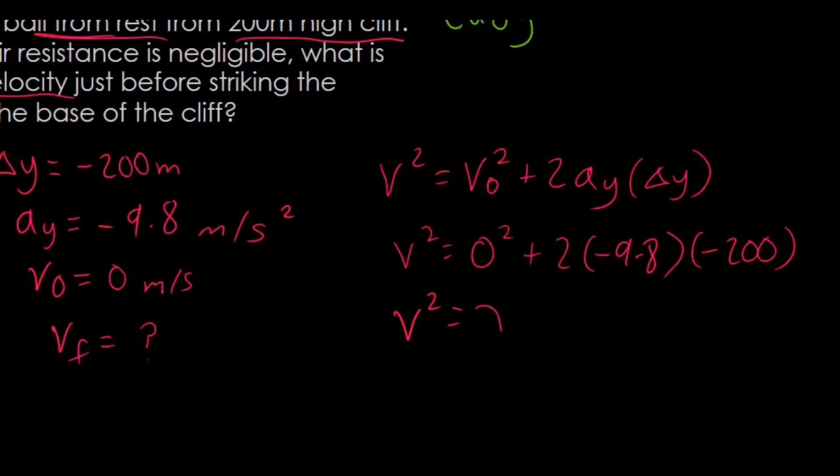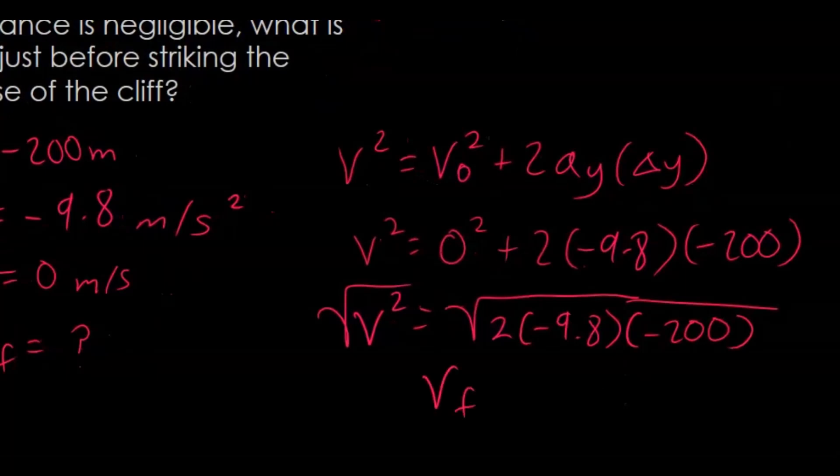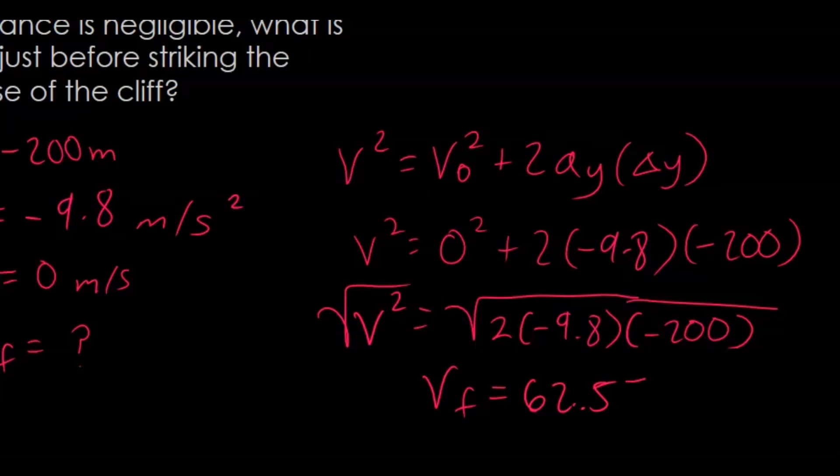We're going to get v squared equals, and we want to take the square root of both sides, the square root of 2 times 9.8 times negative 200. I'm going to plug this into our calculator and we're going to get the final velocity as 62.57 meters per second.